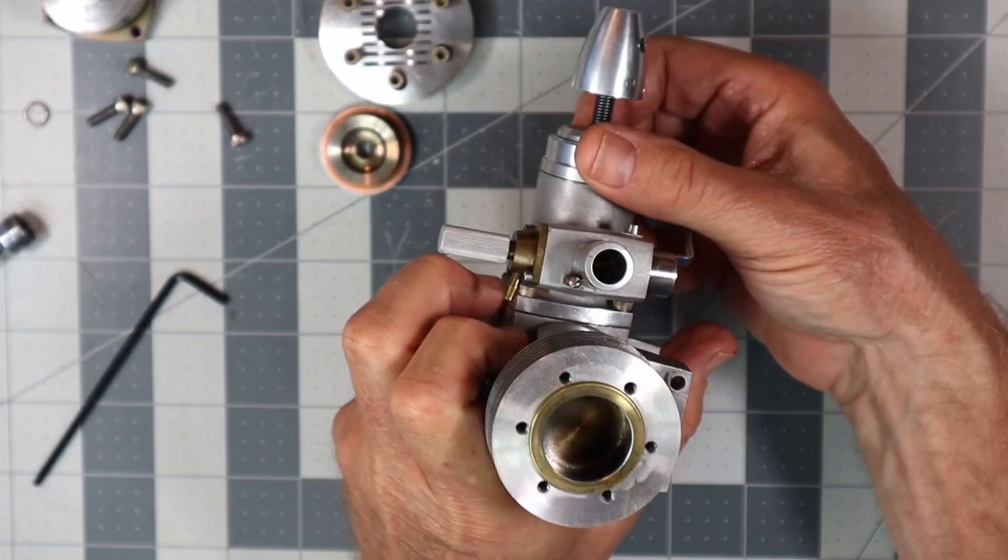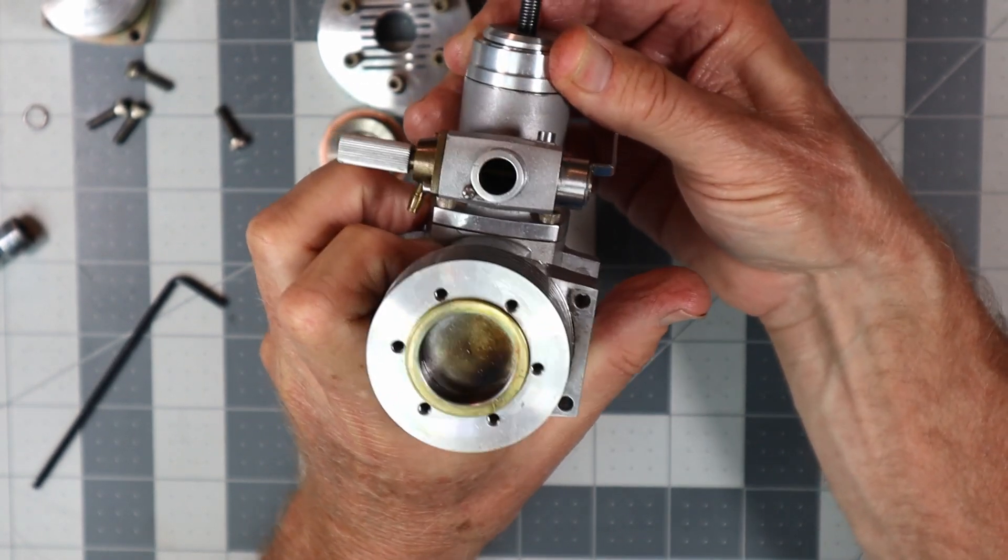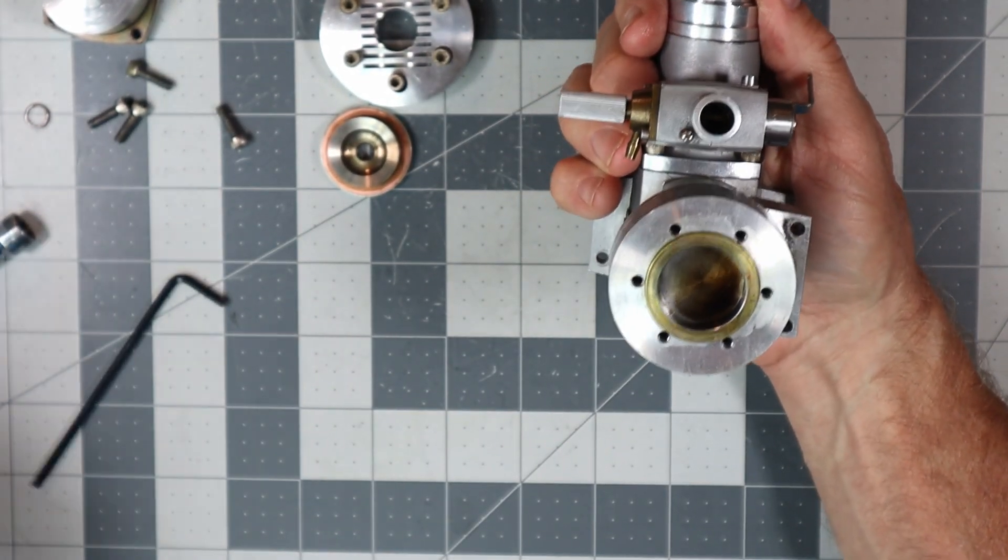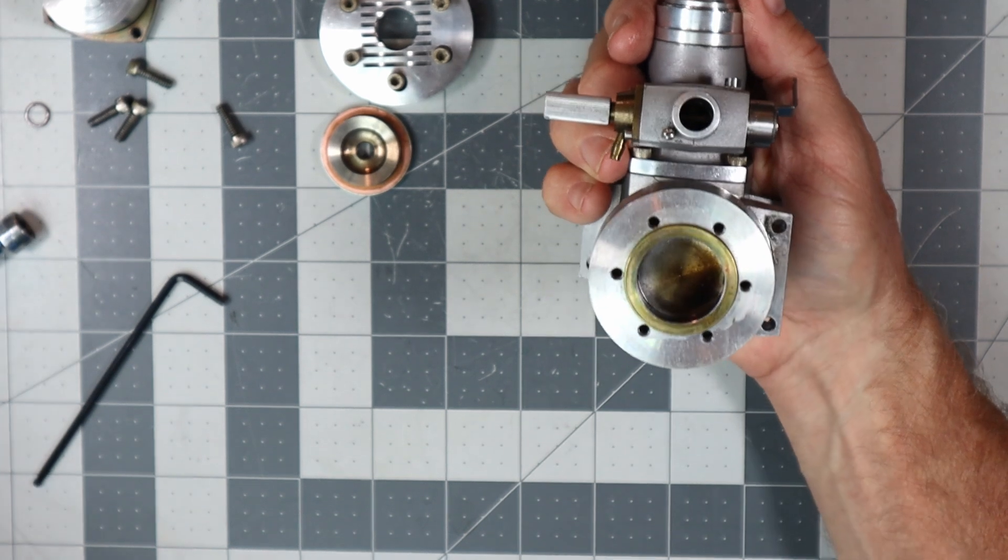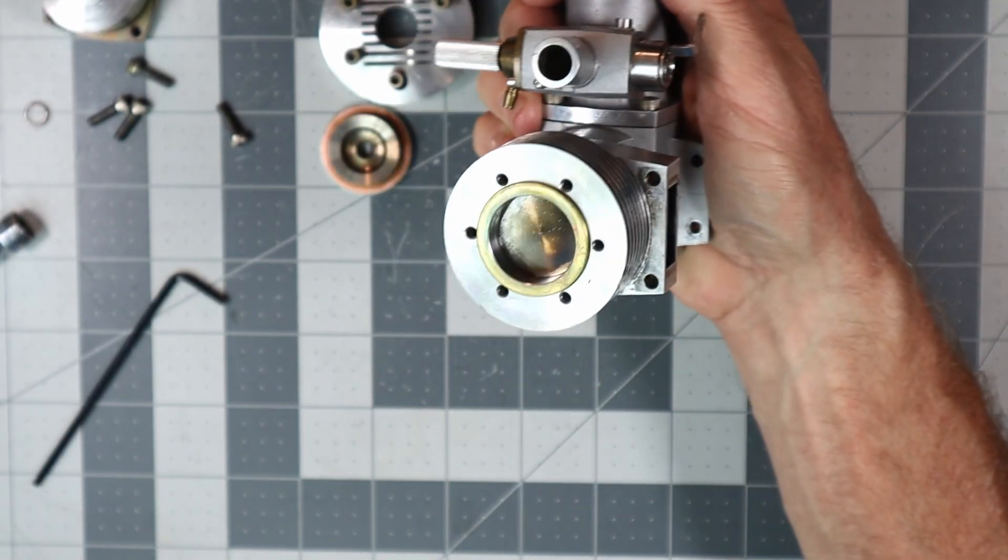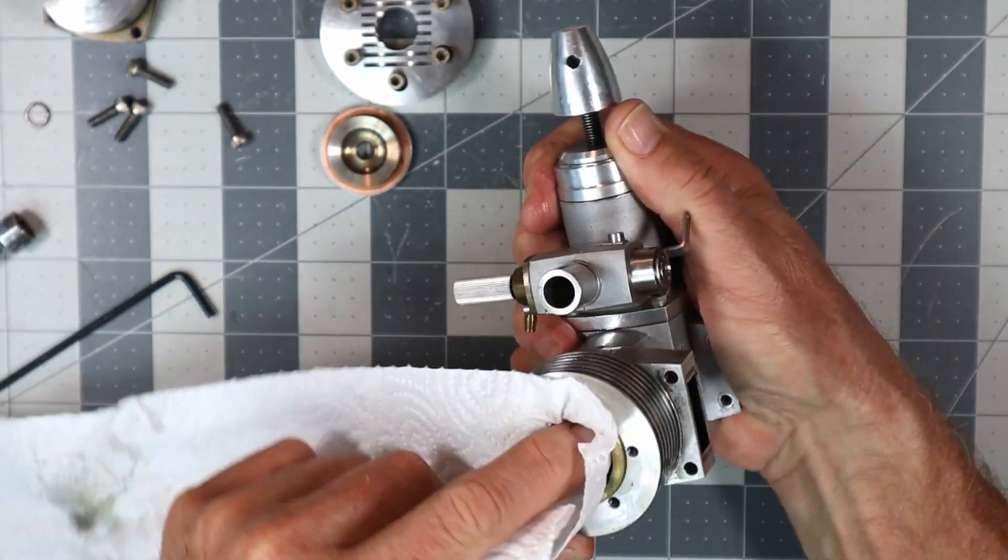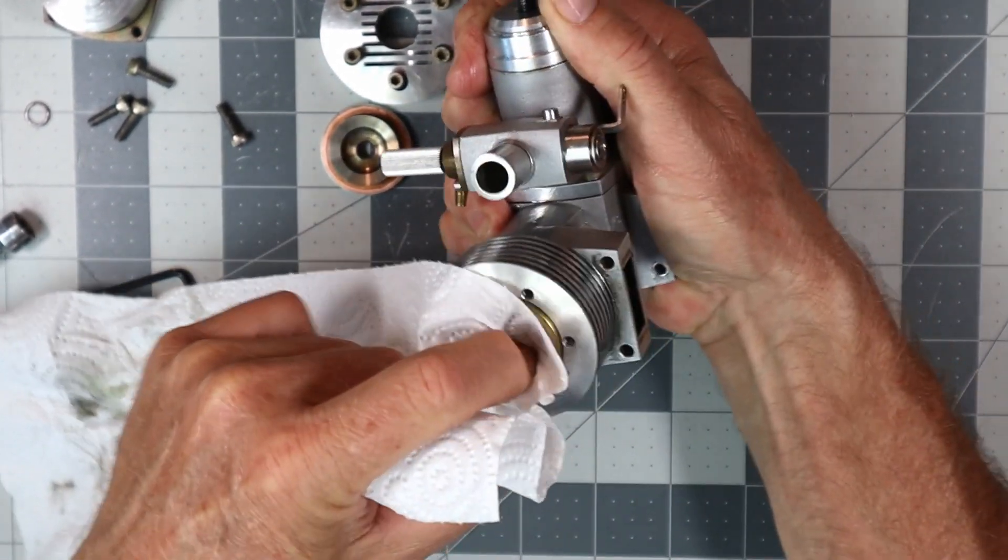So as you can see here, bring the piston up to top dead center. Use the clean end of this towel. A light caramel coloring there just on the exhaust side. Let's see how much of that I can just wipe off.